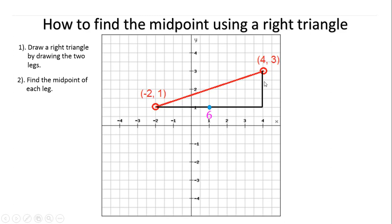You go to the other leg and you would do the same thing. This is 1 unit and that's 2 units — it has 4 little grid lines but it's actually 2 units. So that one has 2 units, so the middle of the 2 units would be 1 unit. You count 1 unit, and that would be the midpoint of that leg.